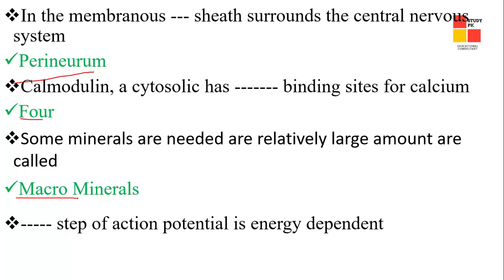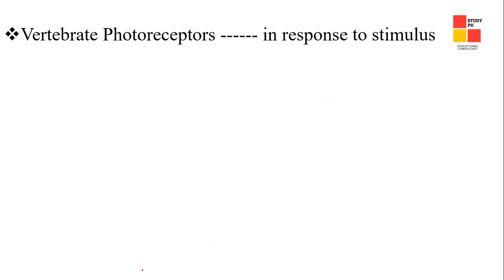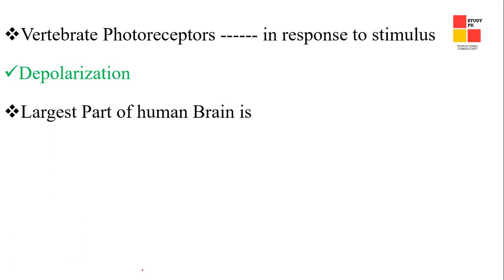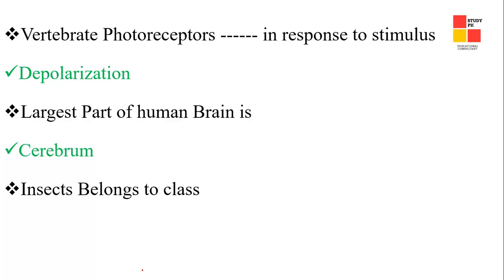Next one: the energy-dependent stage of action potential — that is the right answer. Next one: the vitreous body photoreceptor — in response to light, depolarization is the right answer. Next one: the largest part of the human brain is the cerebrum.